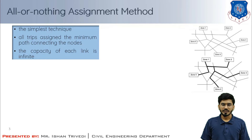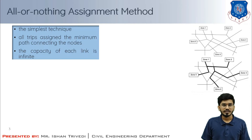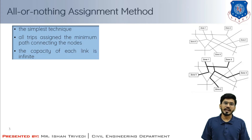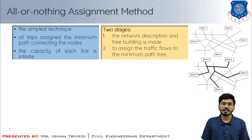The tasks involved are: finding the minimum path between two zones with least travel time, travel cost, and distance. By applying these parameters we have two stages. The first is network description and tree building, and the second stage is to assign the traffic flows to the minimum path tree.